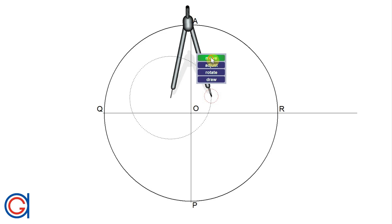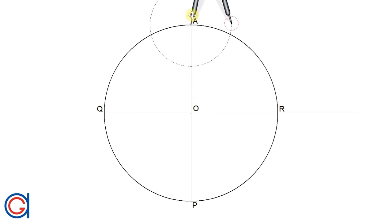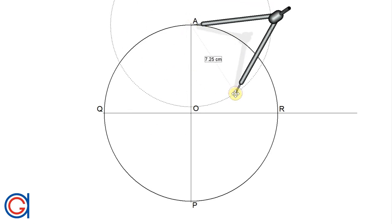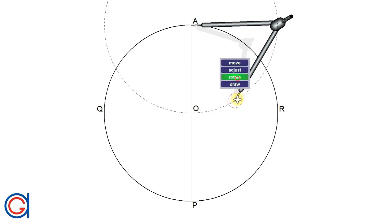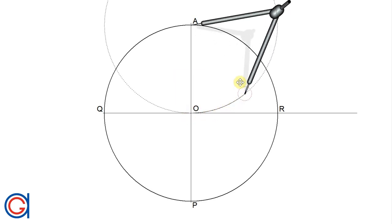So now setting our compass on point A and setting it to the length AO, we scribe an arc to the right until it cuts the circumference at a new point which we will call S.